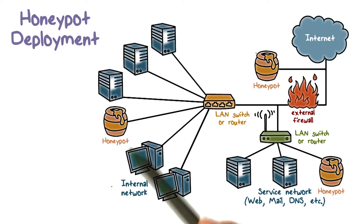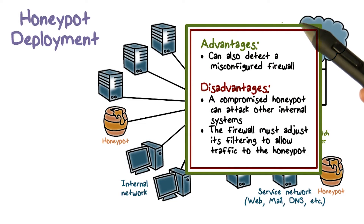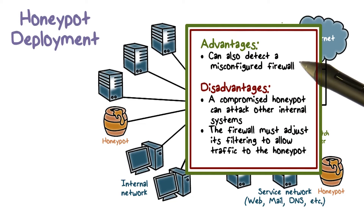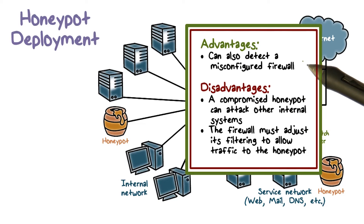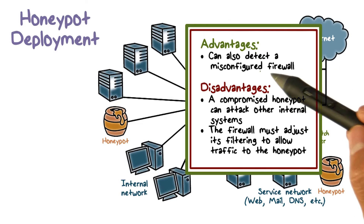We can also place a honeypot in the internal network, alongside servers and workstations. The main advantages here are that it can catch internal attacks, and it can also detect a misconfigured firewall that forwards impermissible traffic from the internet to the internal network.